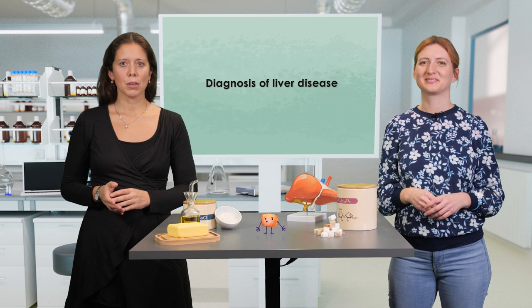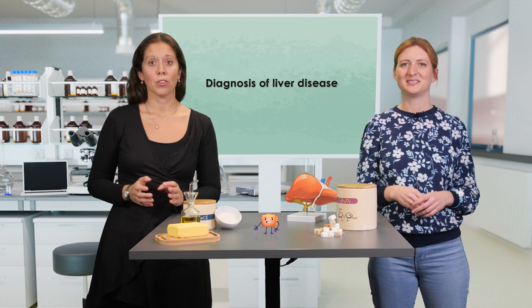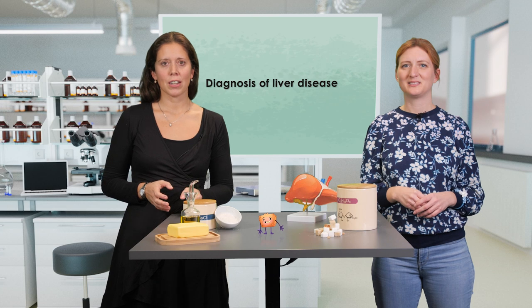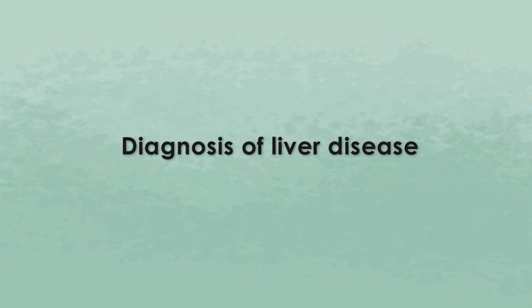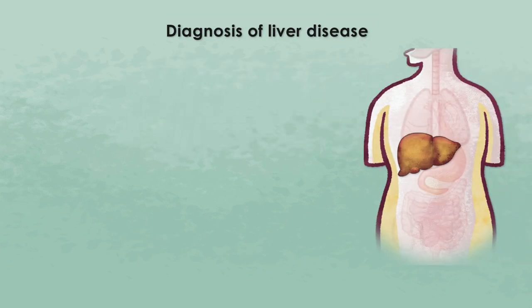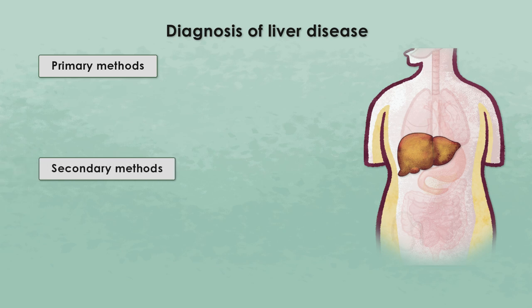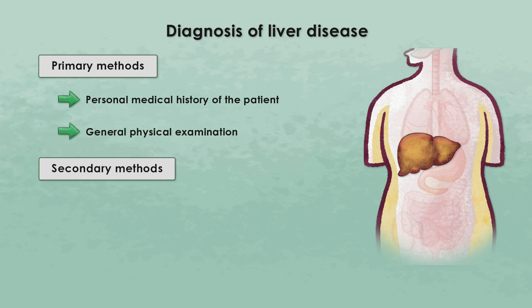We will continue with the different diagnostic steps for liver disease and also the therapeutic strategies used to fight against this condition. For the diagnosis of liver disease, clinicians follow primary and secondary steps. Primary steps include the personal medical history of the patient and general physical examinations. The secondary steps include blood tests, imaging, and eventually liver biopsies.